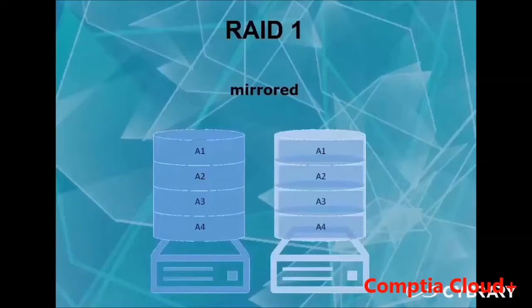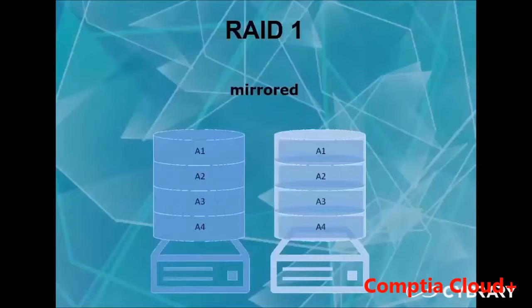One benefit of RAID 1 is that the computer is able to access information from both hard drives at the same time. So if one hard drive is being used and is pulling Microsoft Word, it will pull from the other hard drive — say Firefox — if needed, so that it is able to perform the functions that the user wants.